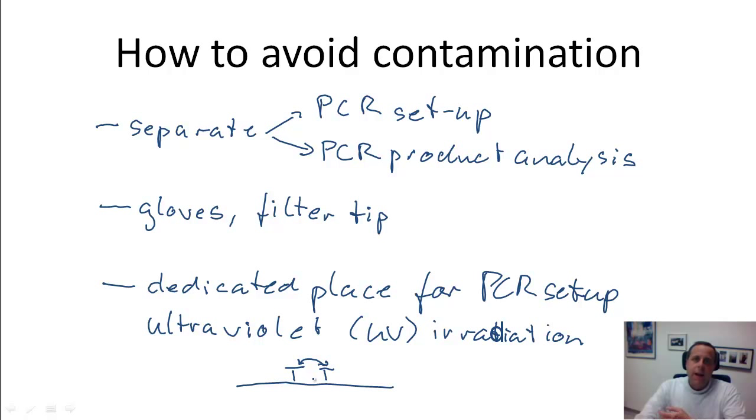And the same will happen to any contaminating PCR product that you accidentally may have spilled in the place where you set up the PCR. The UV irradiation will induce thymidine dimers and other modifications, and this will render it impossible to amplify that contaminating piece of DNA subsequently. So even if you still have it in your reaction, it won't give rise to a PCR product. And that's what you want.